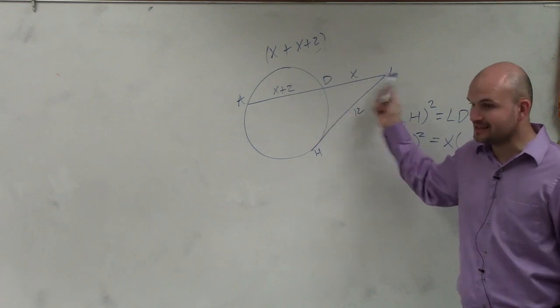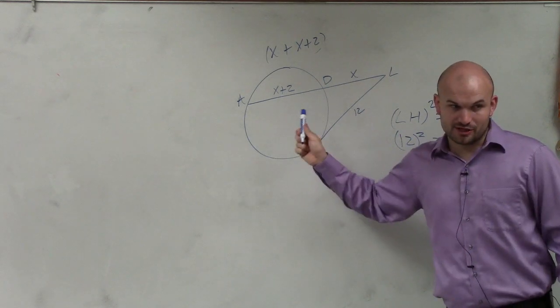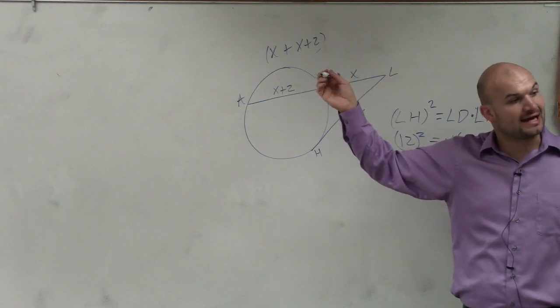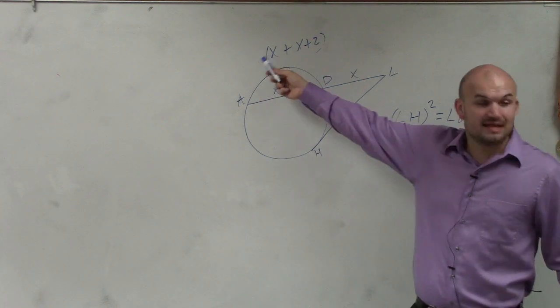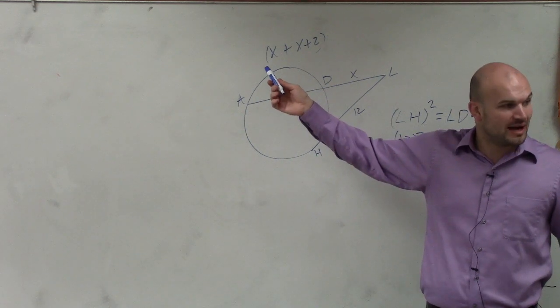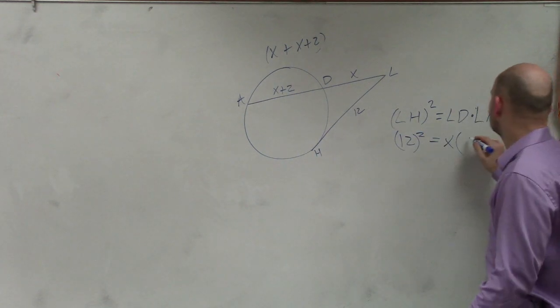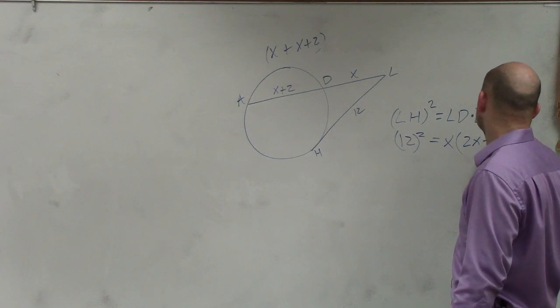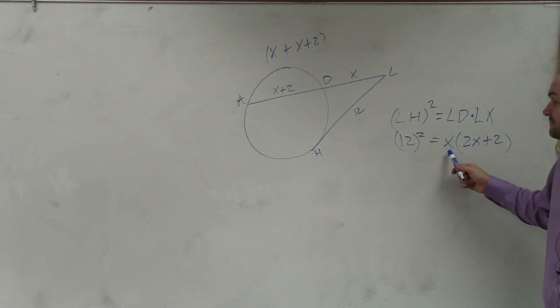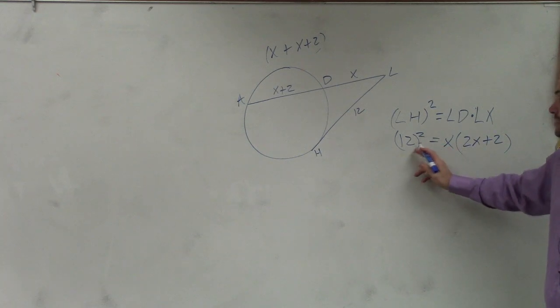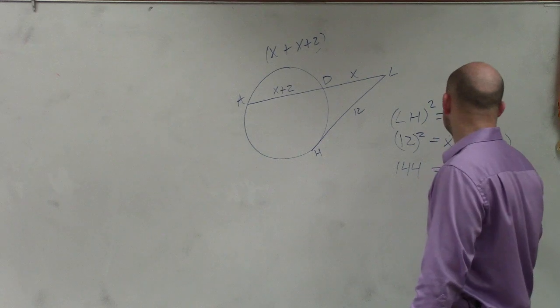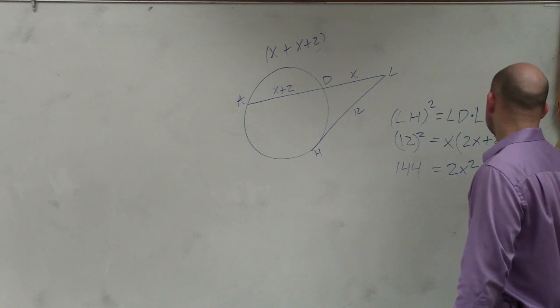We're adding X plus X plus 2. So it's this. This length is X. This length is X plus 2. So X plus X plus 2, in Algebra 1, we learned how to add combined like terms. Since the X's and the X's are the same like terms, I can add them to be 2X. So it would be 2X plus 2. Divided by 2 equals X. Then I'm multiplying this by X. So now I have to apply a distributive property. I can square the left side. So this is 144 equals 2X squared plus 2X.